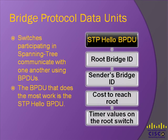Switches participating in spanning trees send messages called Bridge Protocol Data Units, or BPDUs, out of all ports to share information about their view of the local area network with other switches. The message that does the most work is known as the STP Hello BPDU. This message contains the sending switch's root bridge ID, which is the switch that the sender believes to be the root bridge; the sender's bridge ID, which is the bridge ID of the switch sending the Hello BPDU; the cost to reach root, which is the STP cost between the sending switch and current root; and lastly, timer values on the root switch, which includes the hello, max age, and forward delay timers.